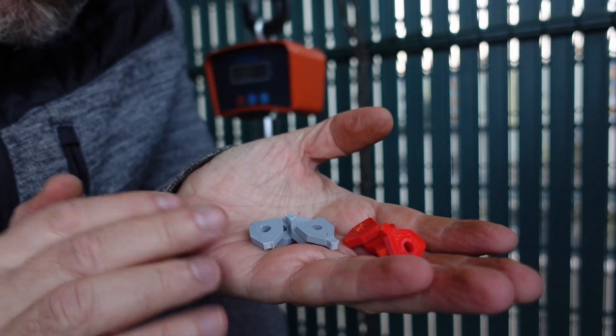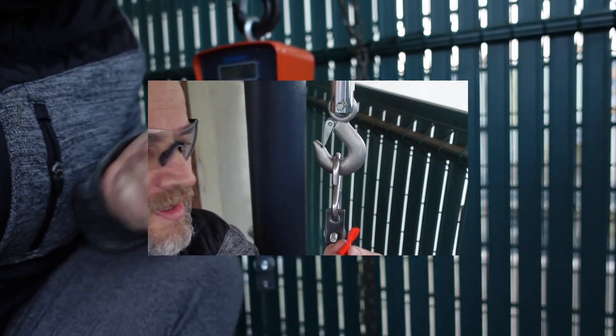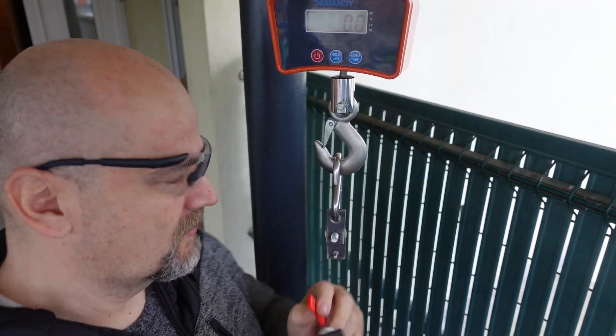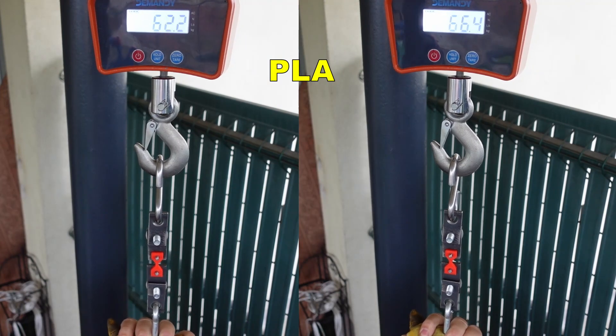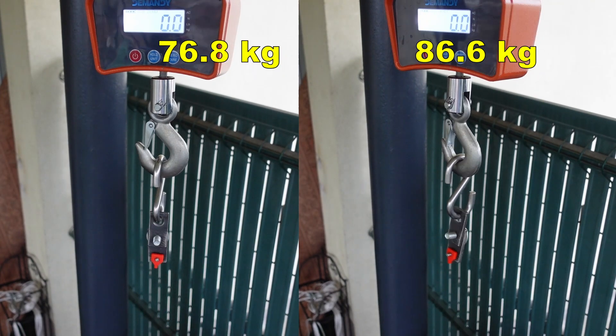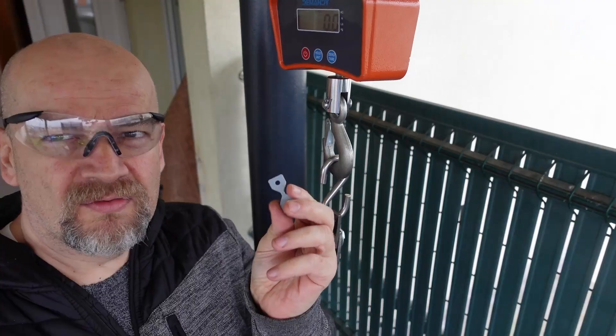They broke correctly on the smallest cross-section area. This means probably everything is okay with the layer adhesion, but let's find out. Now the layer adhesion test.